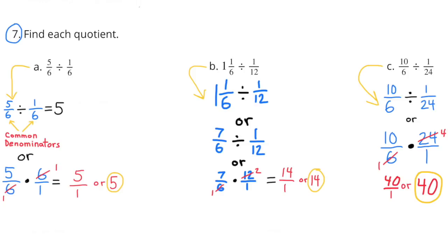Part C: Ten-sixths divided by one-twenty-fourth. That can be rewritten as ten-sixths times the reciprocal of one-twenty-fourth, which is twenty-four over one. Ten-sixths times twenty-four over one equals forty-over-one, or forty.